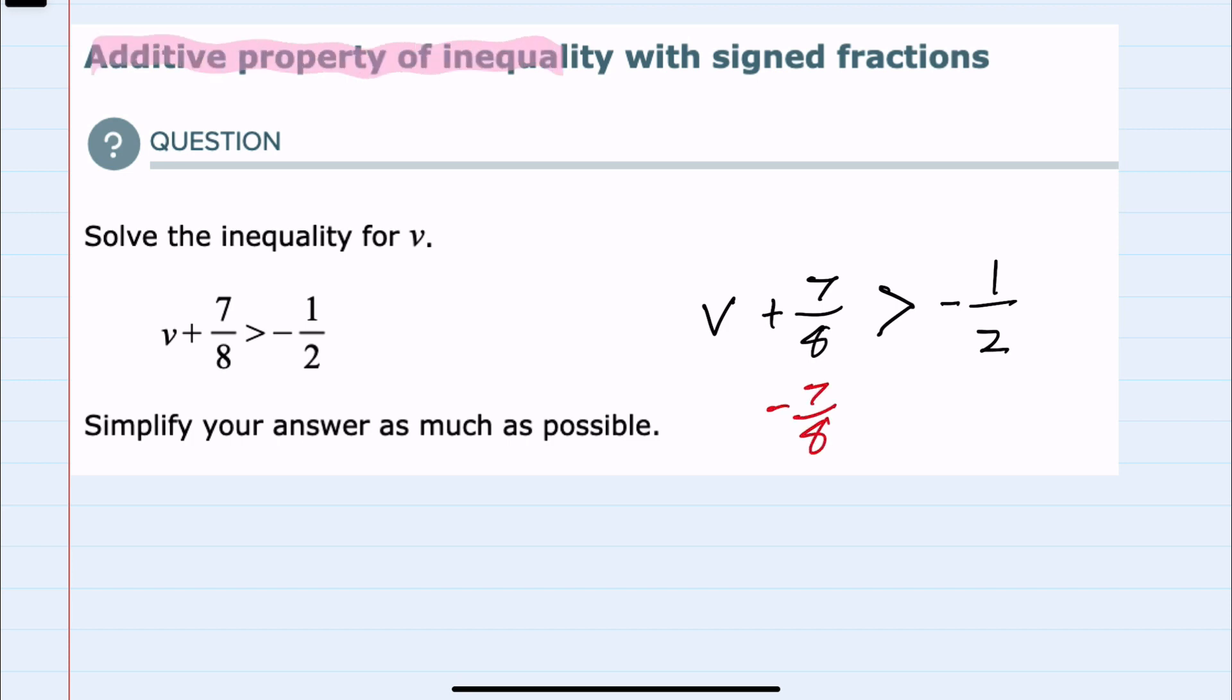The additive property of inequality says that if I add or subtract on one side of the inequality, I must add or subtract the same thing to the other side of the inequality. This will cancel on the left-hand side, leaving me with just the v.